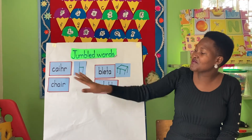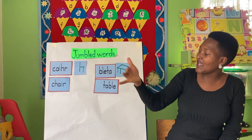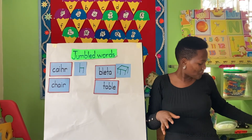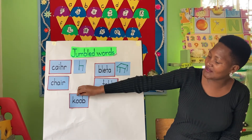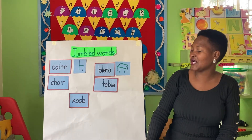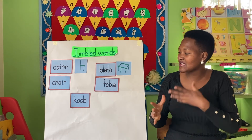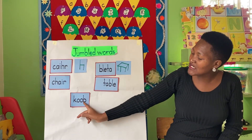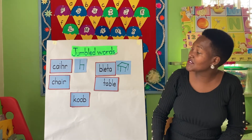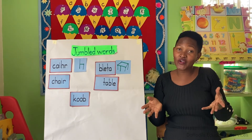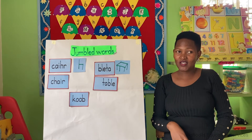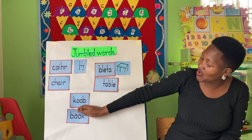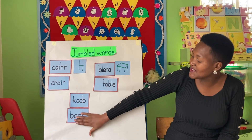So now, since we've been using pictures, as time goes on we drop the pictures and we only use words. Who is going to tell us which word this is? As you can see, the letters are mixed up. So who is going to tell us which word this is? Because it's wrong, but now we have to write it correctly. The word is book. When we write it correctly, it becomes book.